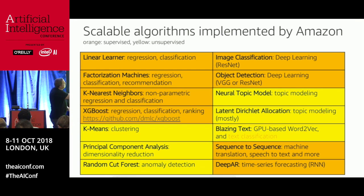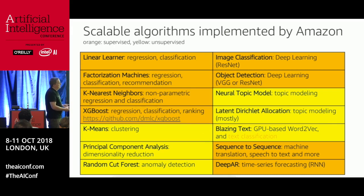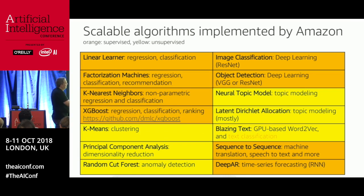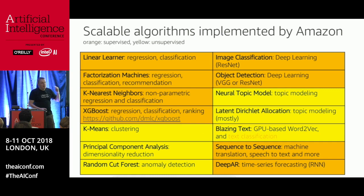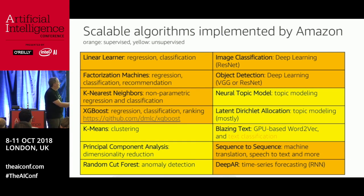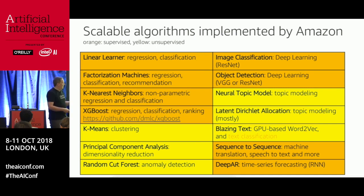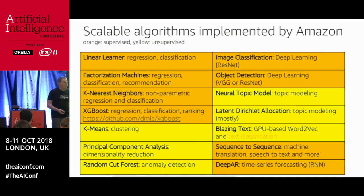We have two algorithms for deep learning tasks: image classification and object detection using SSD. For natural language processing, we have NTM for topic modeling and LDA, which is also used by Amazon Comprehend for topic modeling — so we eat our own machine learning food. BlazingText is basically the next step beyond FastText for computing word embeddings. FastText is great but only runs on CPU; BlazingText now supports GPU, so it can compute Word2Vec and other things at massive speed.